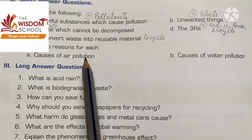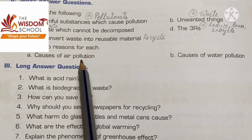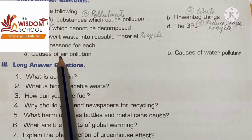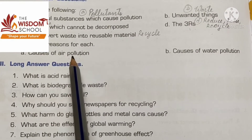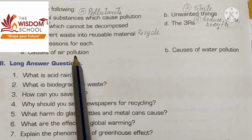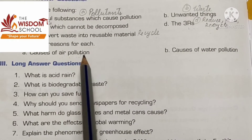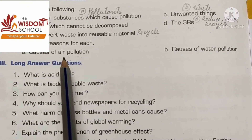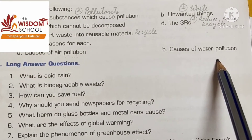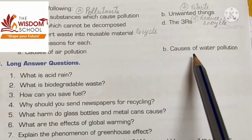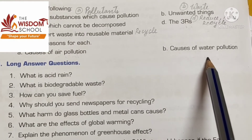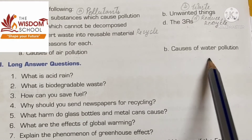Causes of air pollution: first, smoke released from fire and burning of fuels; second, smoke from automobiles, factories, power plants, and waste incinerators. Causes of water pollution: first, waste and garbage thrown in lakes and rivers; second, oil spills and industrial waste spills.